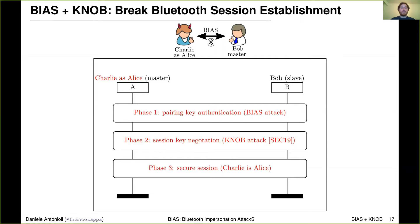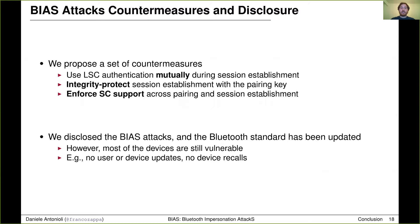In our paper we propose a set of countermeasures for the BIAS attacks. Firstly, Legacy Secure Connections authentication should always be used mutually during session establishment — meaning two times: the first time with the master as the verifier and the second time with the slave as the verifier. Secondly, session establishment should be integrity protected using the pairing key. And finally, Secure Connection support should be enforced across pairing and session establishment. In parallel with the BIAS paper submission, we disclosed our findings to the Bluetooth Special Interest Group and the Bluetooth standard has been updated accordingly. However, this does not mean that all devices are no longer vulnerable, as patching actual devices is harder than updating the standard. We expect that most devices will not receive any patch, or the cost of patching them will be too high — for example, you don't want to recall millions of cars that cannot be patched remotely. We experienced similar issues with the KNOB attack.